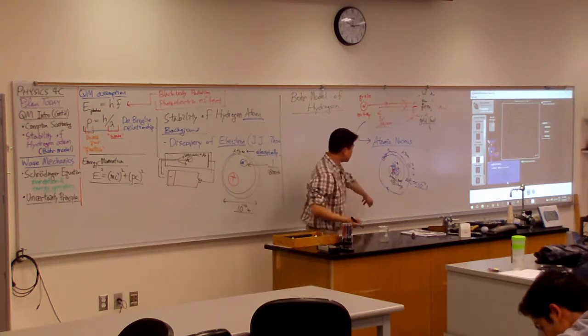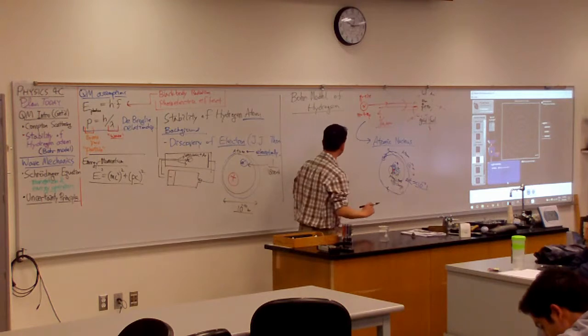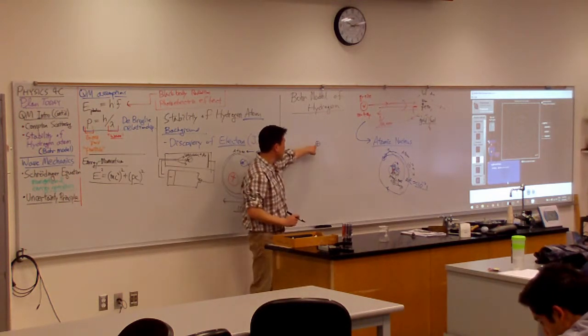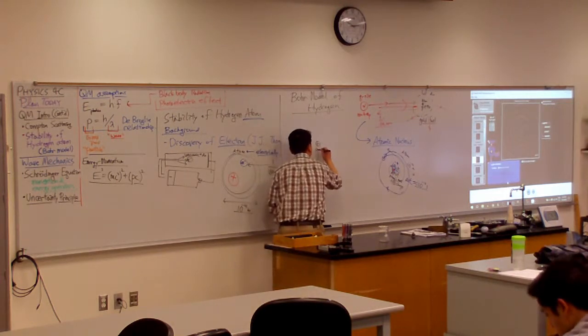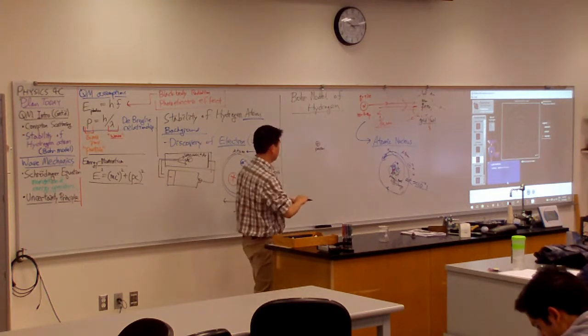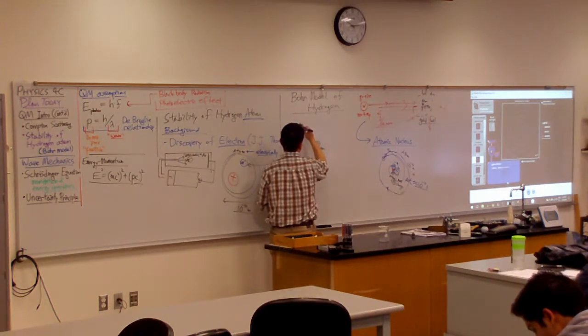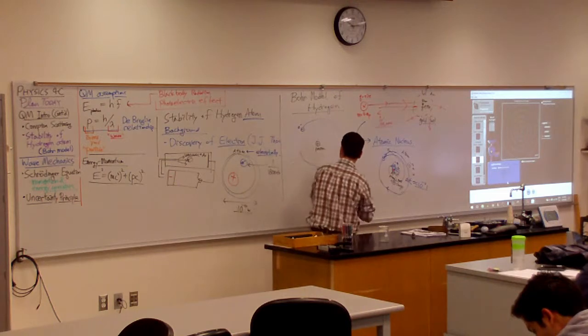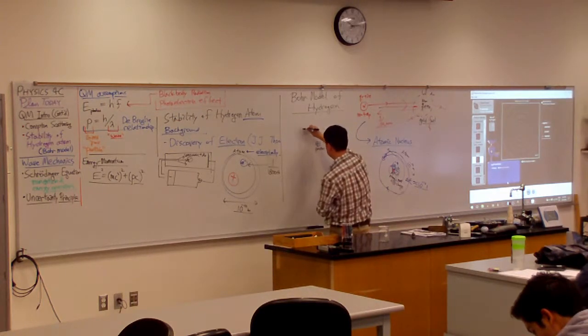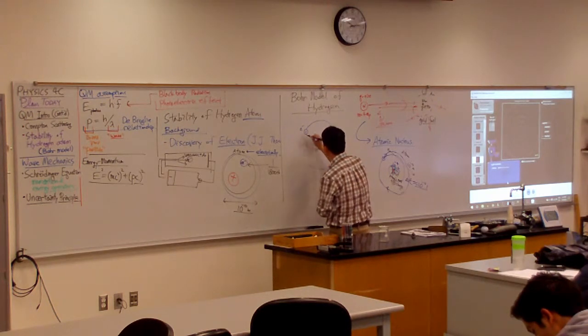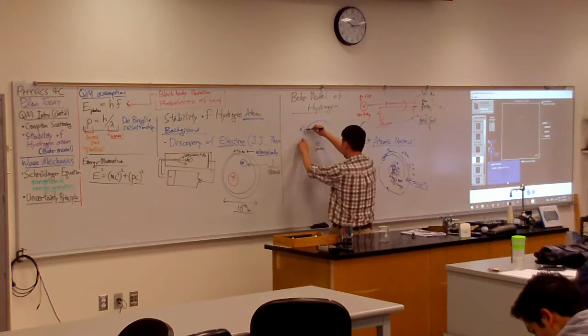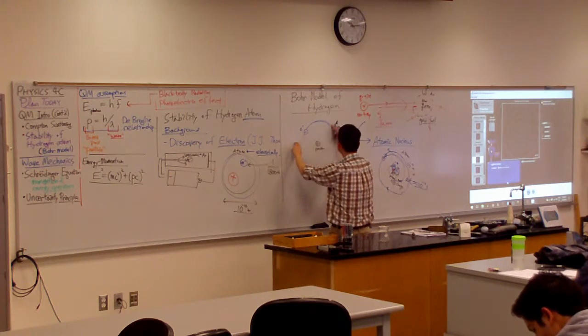So he actually starts from this solar system model. So you start out with, I'm going to have the atomic nucleus that has all of the positive charge at the very center. This is what we'll end up calling proton. So you have the proton here. And the electron is going to be in orbit around this proton. So you have electron that's in orbit around the proton.